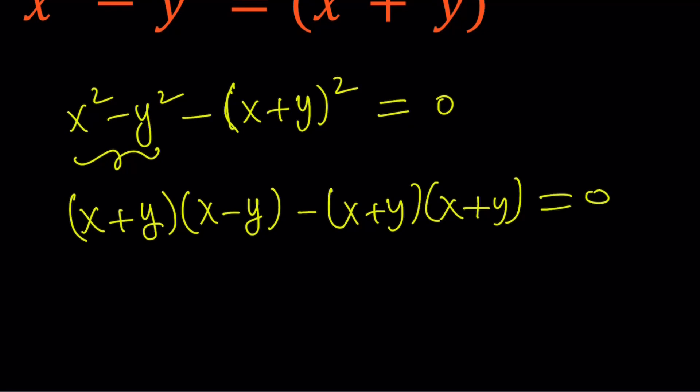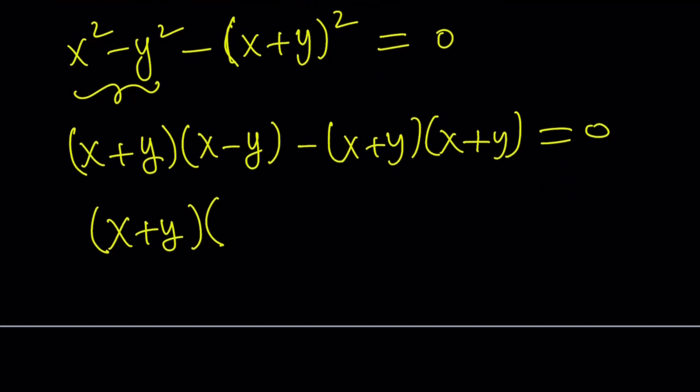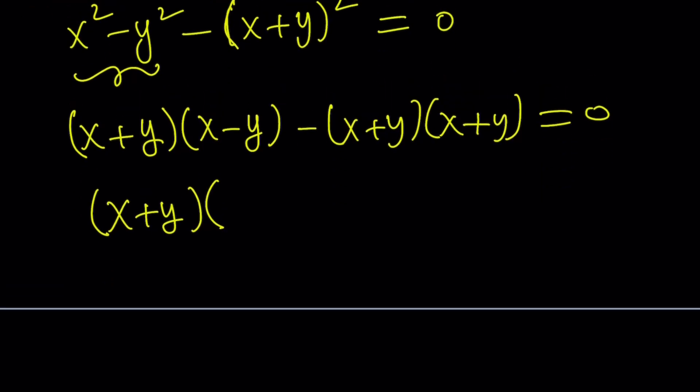Now, we did get a common factor, which is x plus y. So let's go ahead and take it out. This is called factoring by greatest common factor. And then inside, we have to write terms such that when we distribute and multiply by x plus y, we should get the original expression.